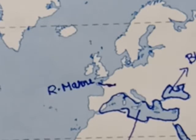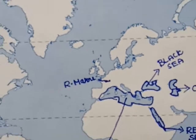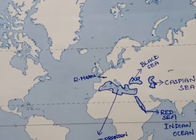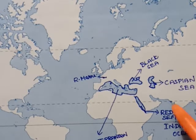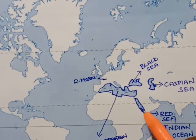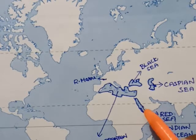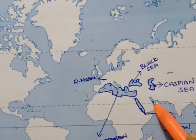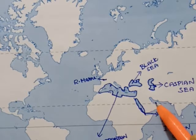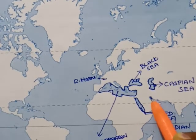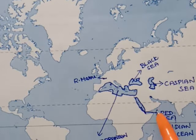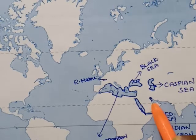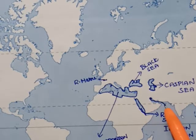This is the Gulf. You can see the Red Sea — this is the Red Sea on the opposite side of the Gulf. This is the blue area — this is the Gulf, the Persian Gulf.